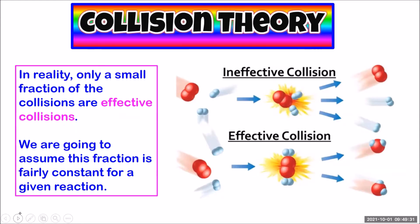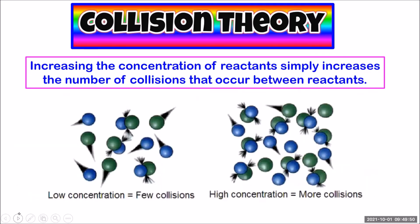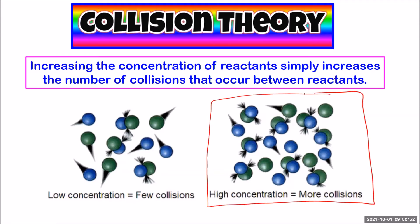In reality, only a very small fraction of collisions are effective collisions, and we're going to assume that this fraction is fairly constant for a given reaction. Collisions happen because the molecules are whizzing around randomly — they bounce off the walls of the container, but they also bounce off each other, and that's what we call a collision. Increasing the concentration of reactants just puts more molecules into the same container size. So imagine if I put 10 people in a room, blindfold them, and make them wear earmuffs so they can't see or hear each other, and ask them to move around — there's going to be some collisions with the walls, and some collisions with the other people. Now imagine that I put 50 people in that same room, again blindfolded and wearing earmuffs, and ask them to move around. There will be more collisions just because the room is more crowded. The same thing happens with molecules — with more molecules in the same size container, it's more crowded, so we see more collisions happening.